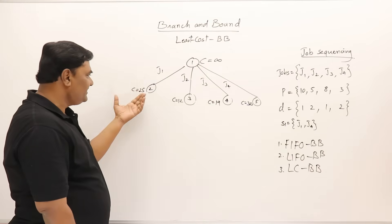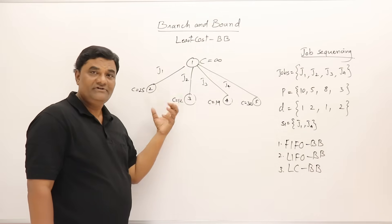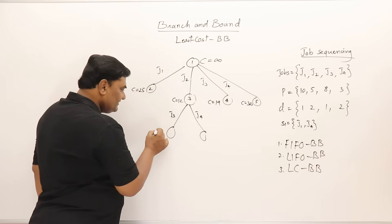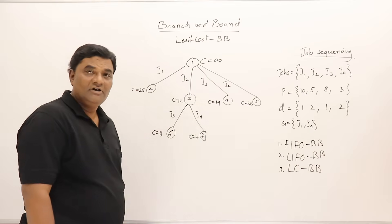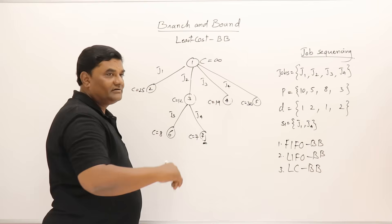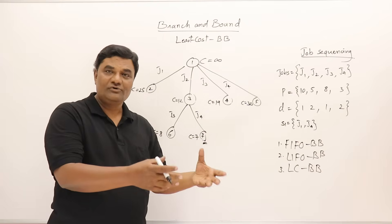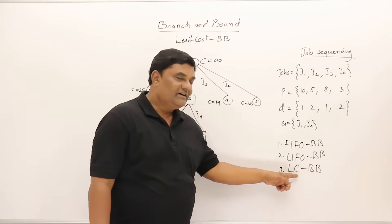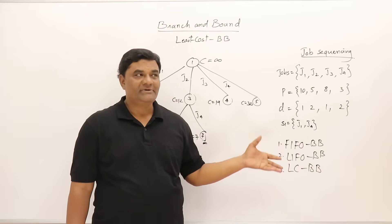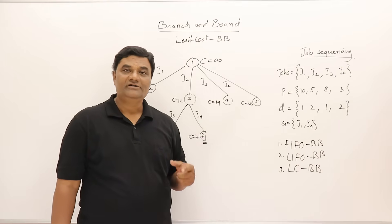Comparing the three methods: FIFO expands in queue order, LIFO expands the most recently added node, and LC branch and bound always expands the node with the least cost. Expanding the least cost node (job two), we generate job three with cost 8 and job four with cost 7. Since job four on this path is the last node, the solution is second job and fourth job. By always picking the minimum cost node we reach the solution quickly. LC branch and bound is much faster than FIFO or LIFO. In upcoming videos I will solve problems using branch and bound.